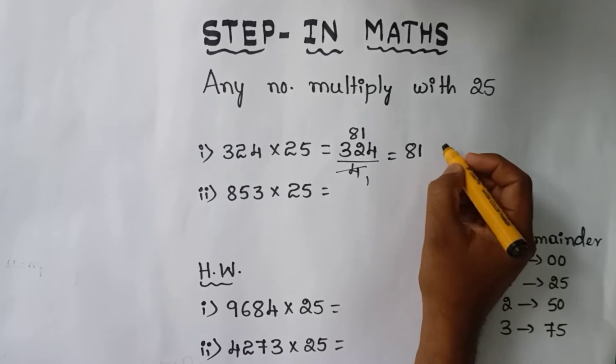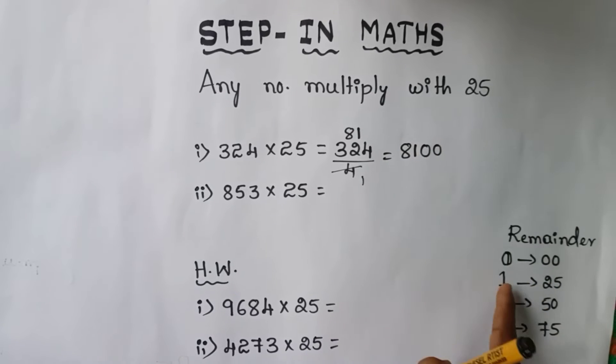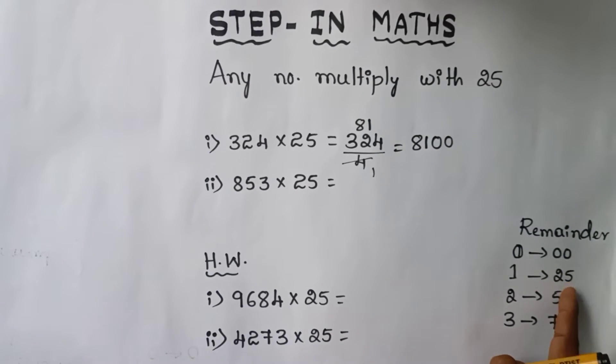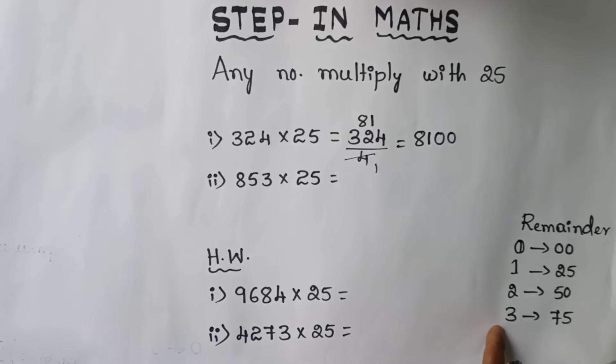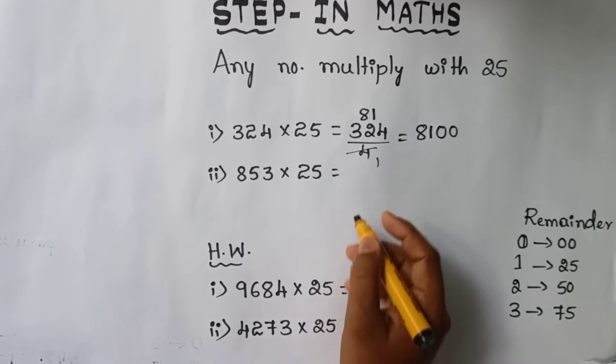When remainder is 0, then you keep double 0. If it is remainder is 1, then you write 25. If remainder is 2, then 50. If remainder is 3, then 75.